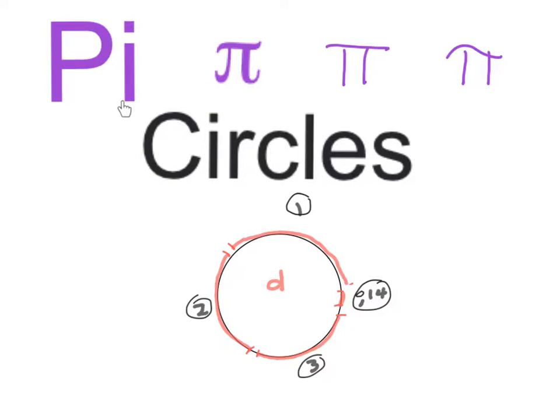Pi, or sometimes called P, is written like this or sometimes like this or sometimes like this. It's used at circles and what does it actually mean?